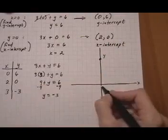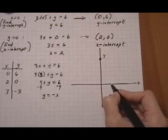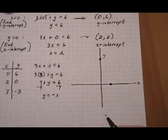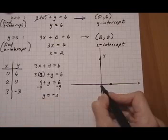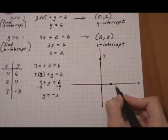And then we have (2, 0). So 2 for x, 0 for y right there. And then we have (3, negative 3). So over 3, down 3.